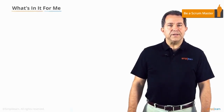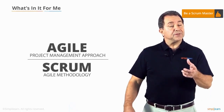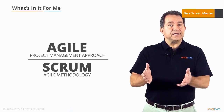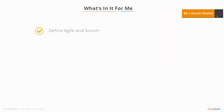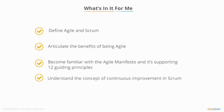The purpose of this lesson is to introduce you to Agile as a project management approach and Scrum as an Agile method. After completing this lesson, you'll be able to define what both Agile and Scrum are, articulate the benefits of being Agile, be familiar with the Agile manifesto and its 12 guiding principles, and understand the concept of continuous improvement within the context of Scrum adoption.